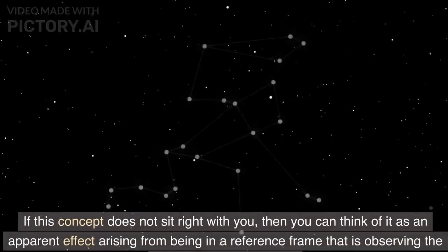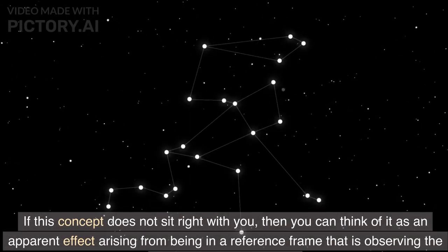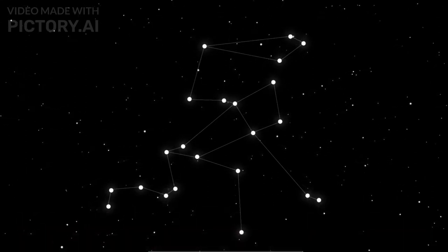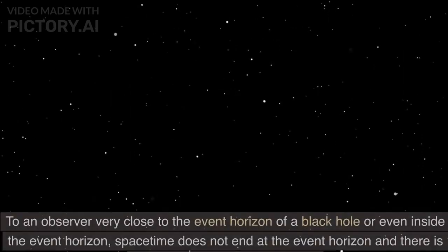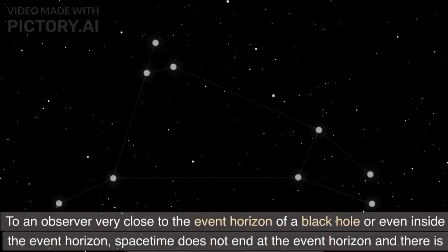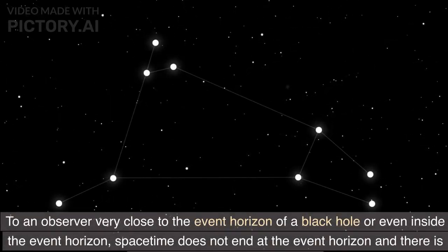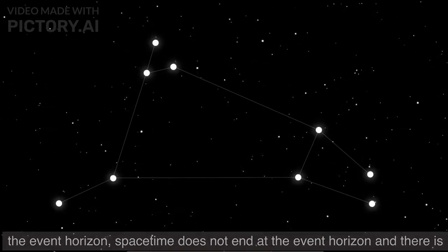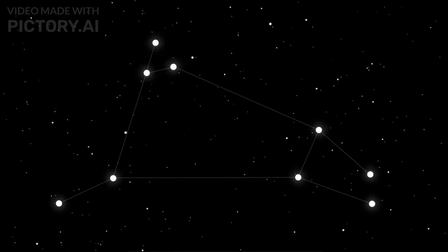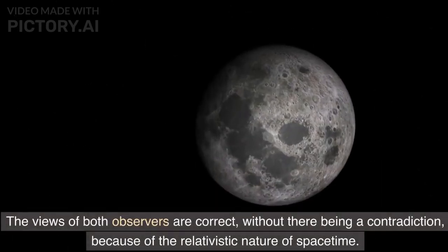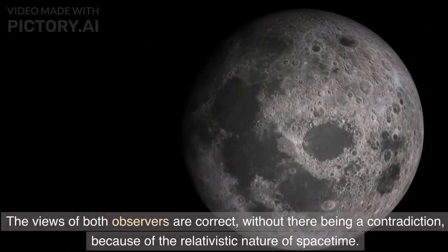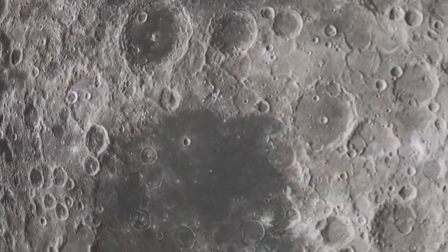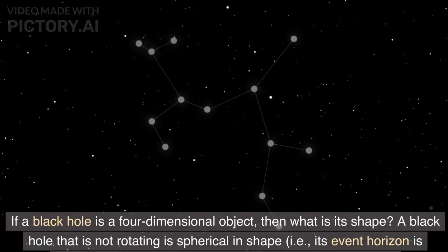If this concept does not sit right with you, then you can think of it as an apparent effect arising from being in a reference frame that is observing the black hole from far away. To an observer very close to the event horizon of a black hole or even inside the event horizon, spacetime does not end at the event horizon and there is indeed an inside to a black hole. The views of both observers are correct, without there being a contradiction, because of the relativistic nature of spacetime.